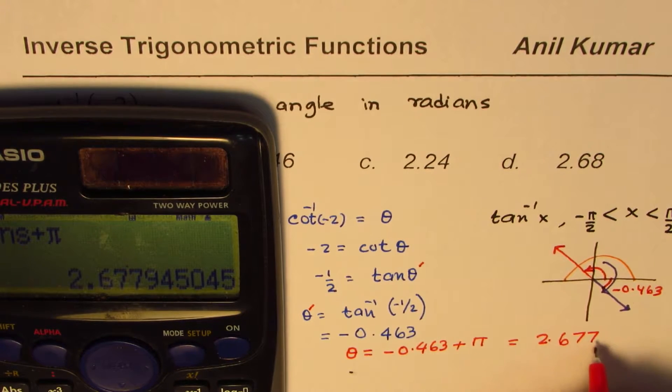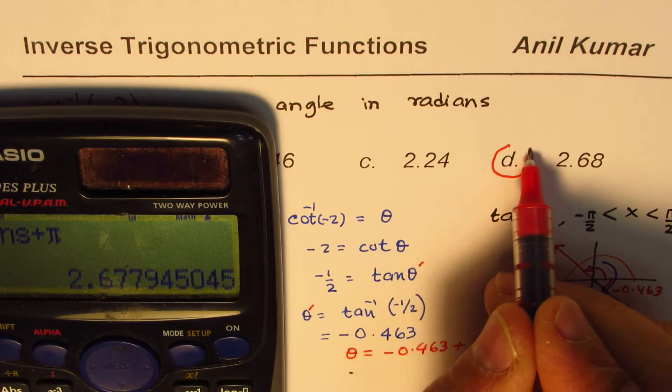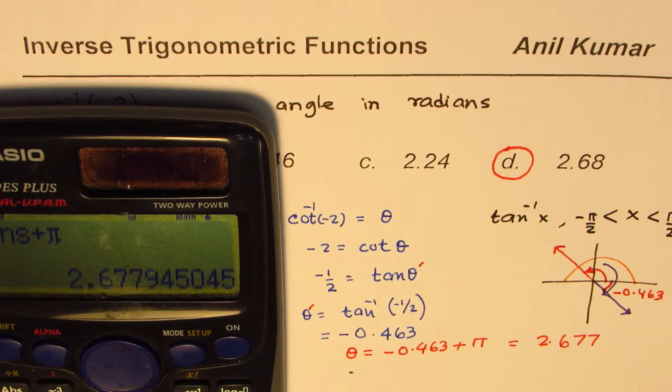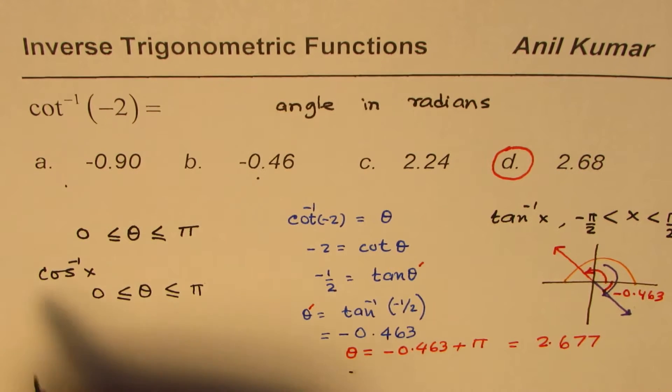2.677, which is rounded to 2.68. So that becomes the right answer, correct? So this is one way of doing it. Probably the faster way of doing it, there is another way you could do - that is to use directly cosine function.